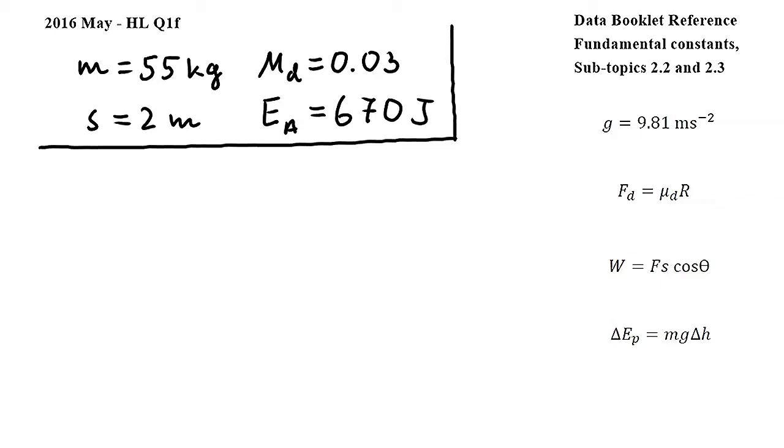In this question we have to decide whether the ice blocks will reach C. Since there is friction between A and B, there will be some energy dissipated while the blocks are traveling from A to B. Let's find this energy dissipated.